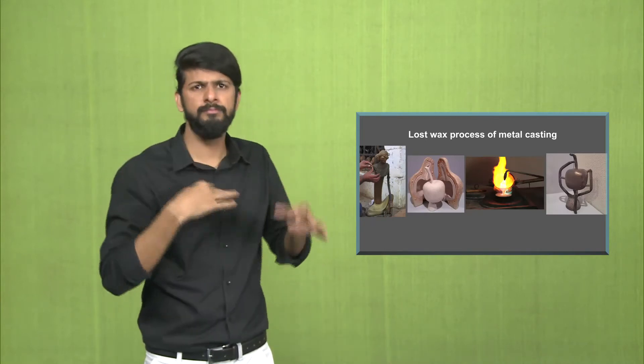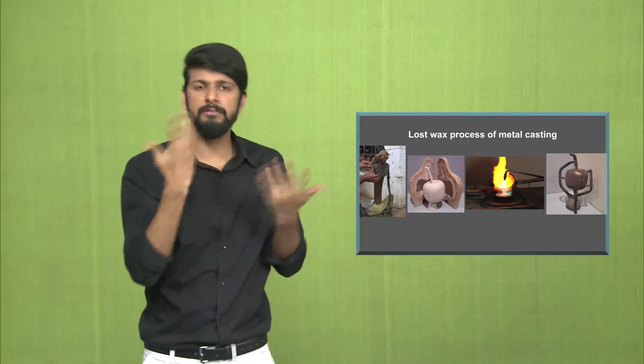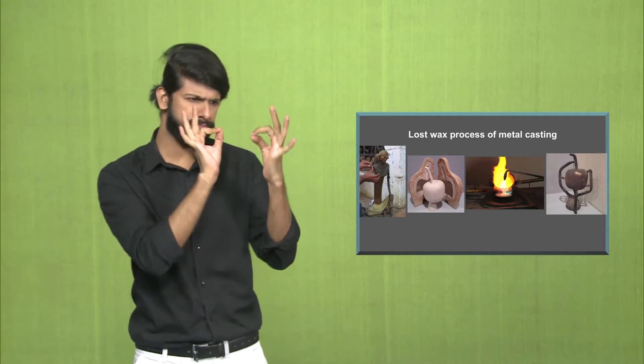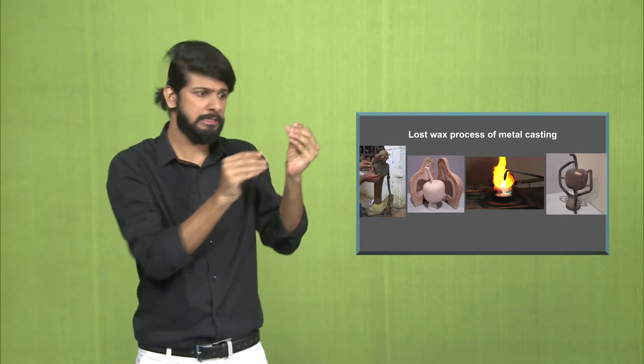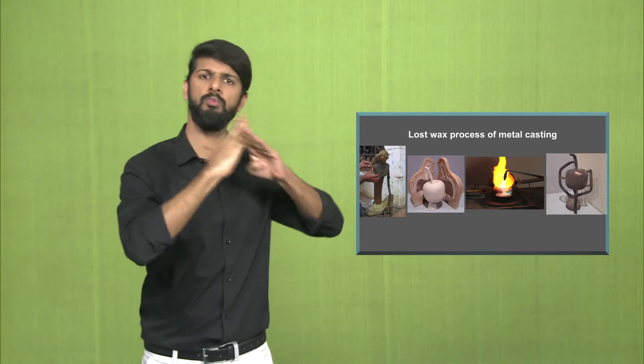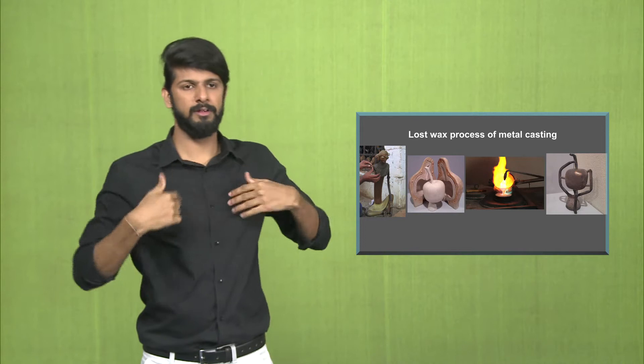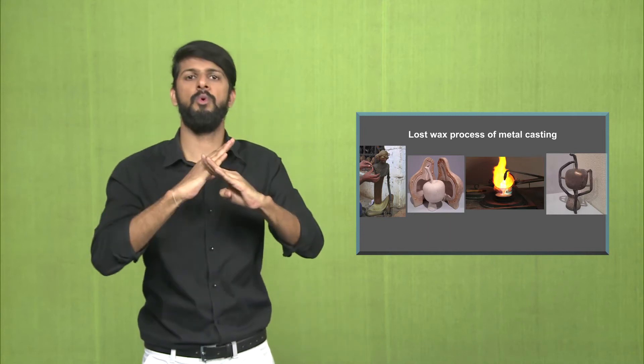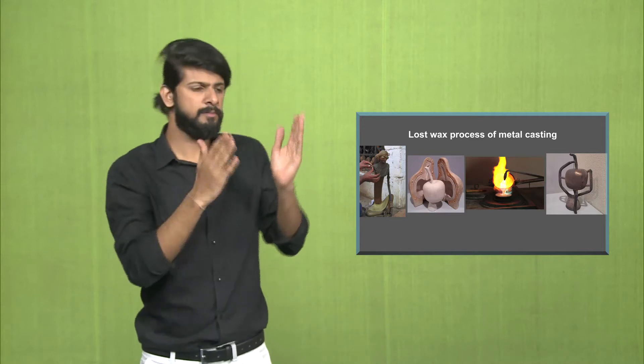The dancing girl is made through a process known as the lost wax process of metal casting. First, the model of the dancing girl was made using wax. The entire body was molded. Then they would use various materials, for example plaster, on all sides. To ensure that the dancing girl figure made of wax didn't fall, they would give it some support.